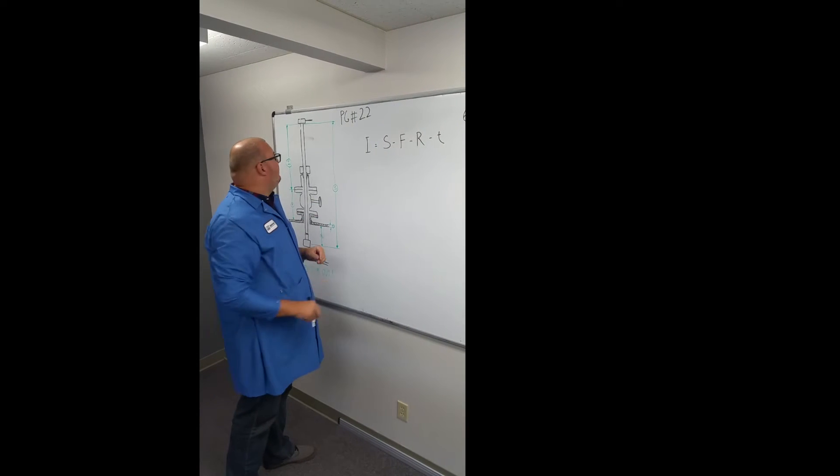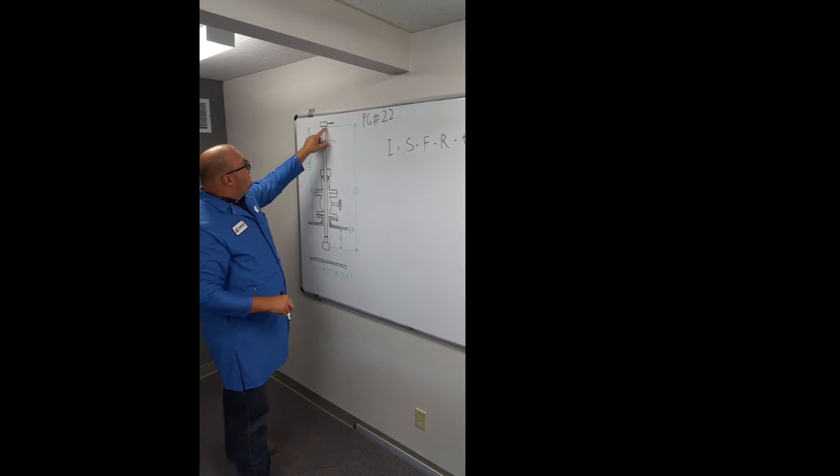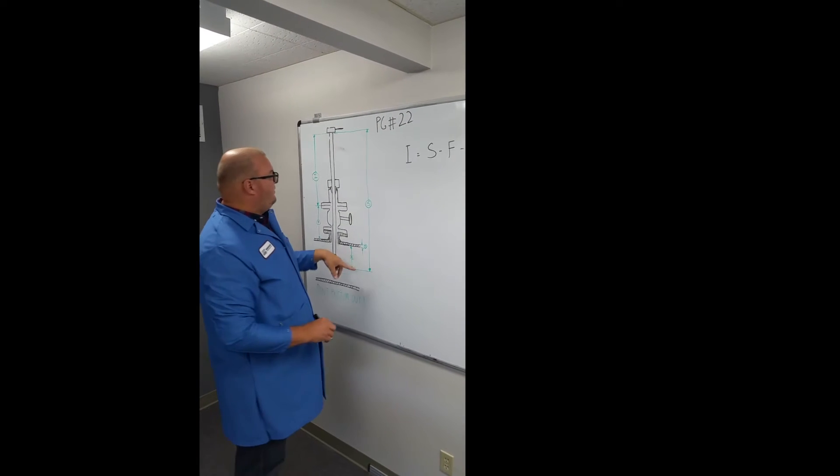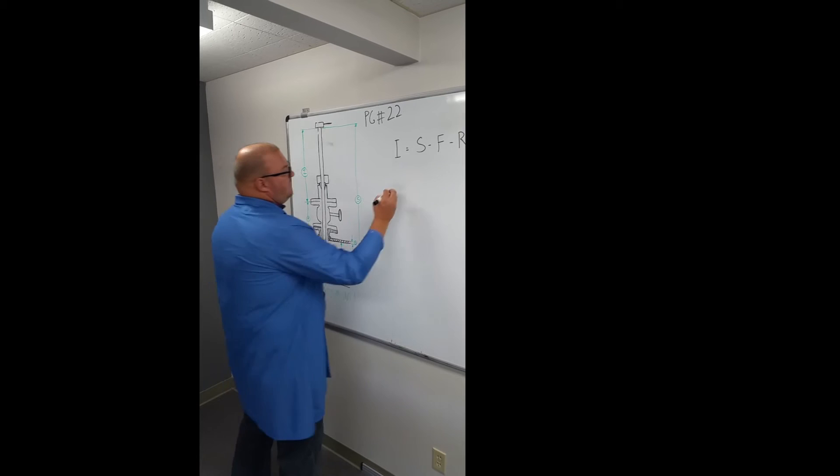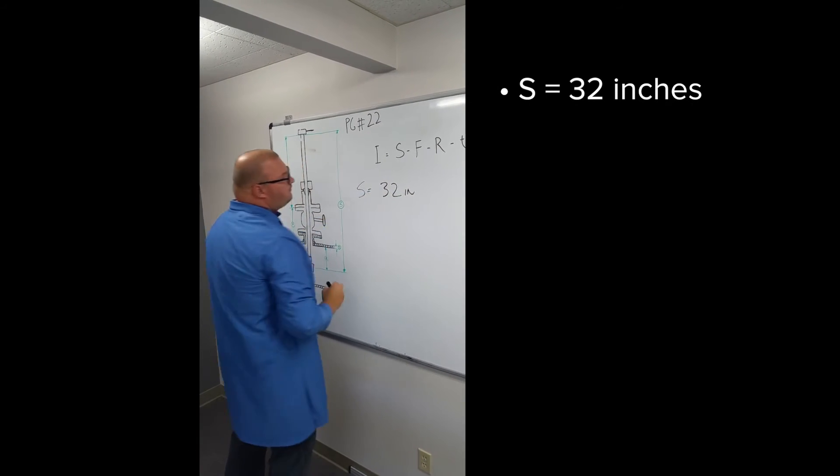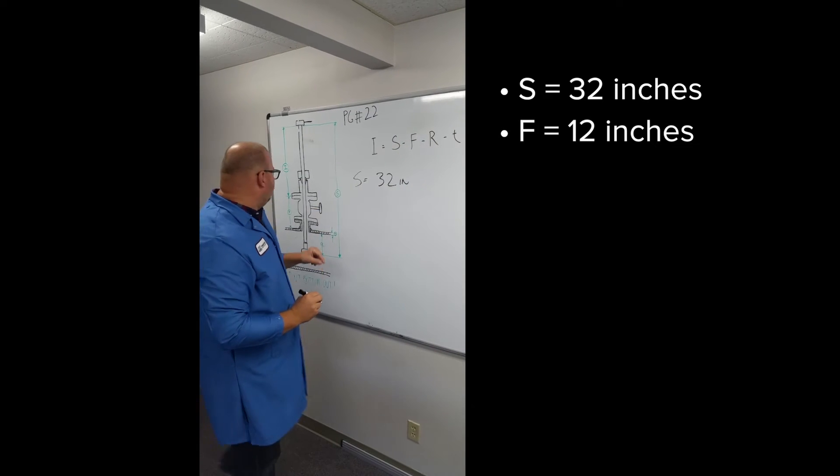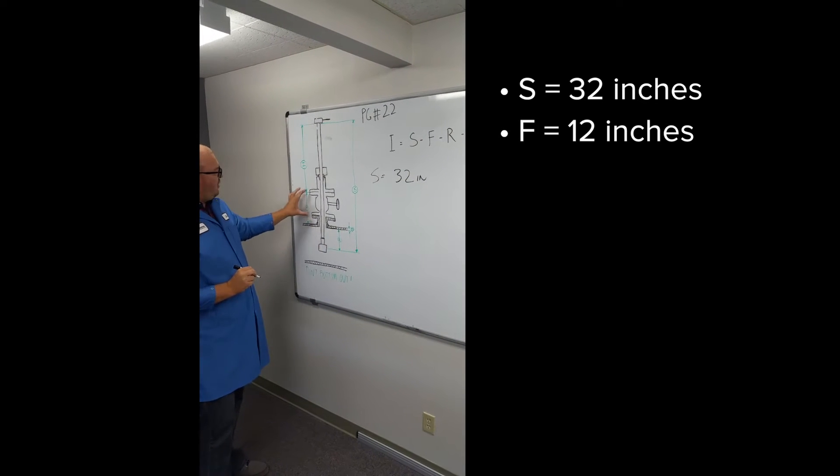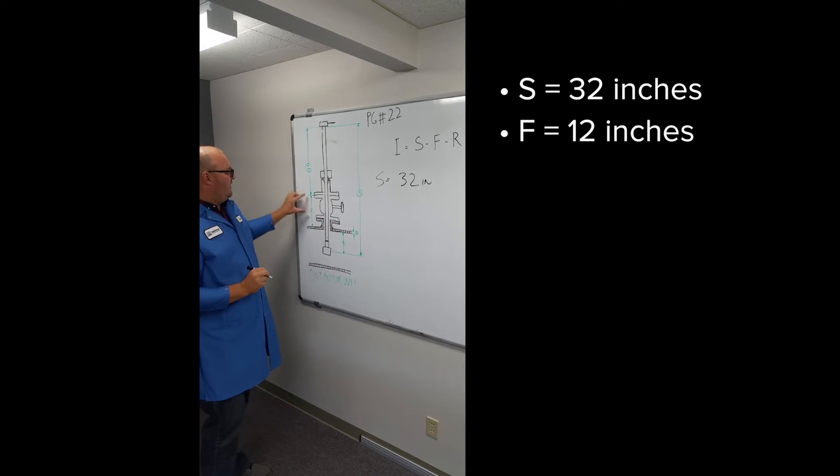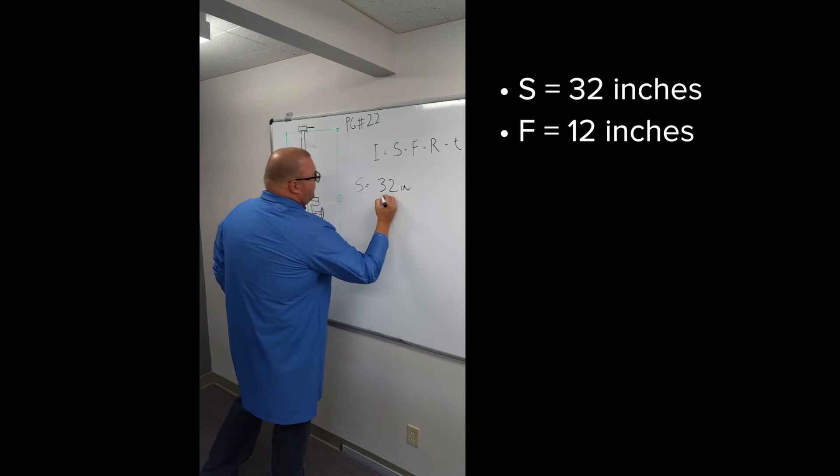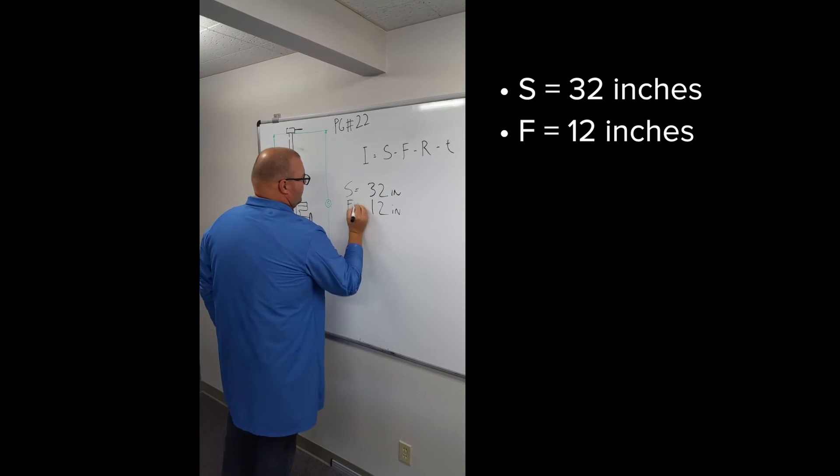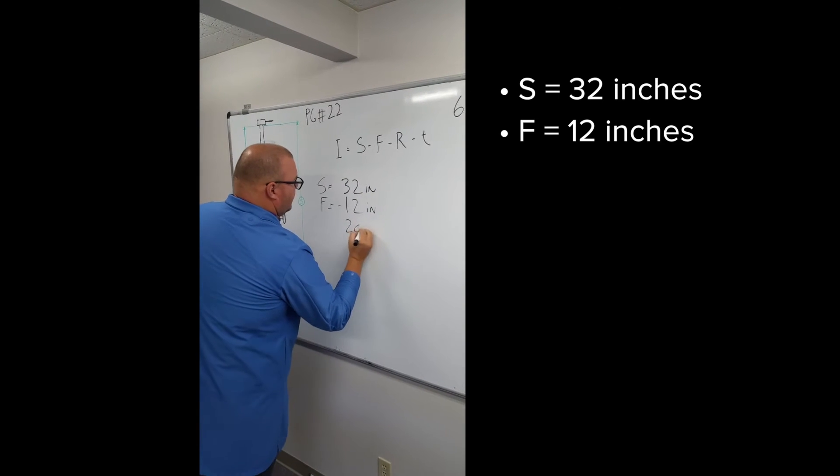S is our stem length of the probe which is the length from the pointer to the center of the head of the probe down here. On a standard length probe that's going to be 32 inches. Next is F which is the length of your process connection. In this case it's a flange weldlet and an isolation valve. F is 12 inches. If I subtract those, it's pretty easy, 20 inches.